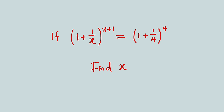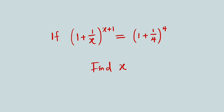Observe this question. We are given that (1 + 1/x)^(x+1) = (1 + 1/4)^4, and we are asked to find the value of x. If you relate these terms, you will observe that without this plus 1 in the exponent, we would have concluded that x is equal to 4, because that is just the difference between the two terms left to right.